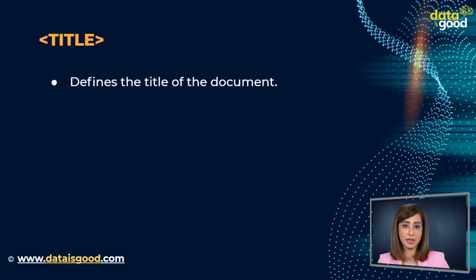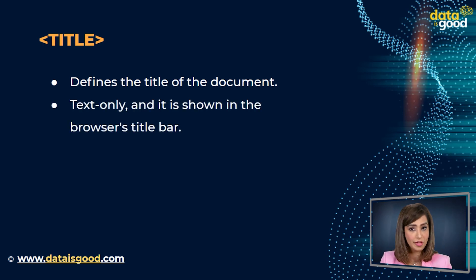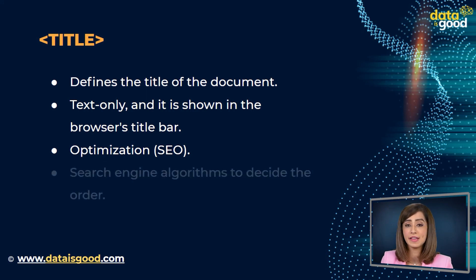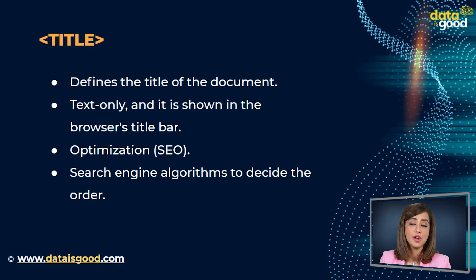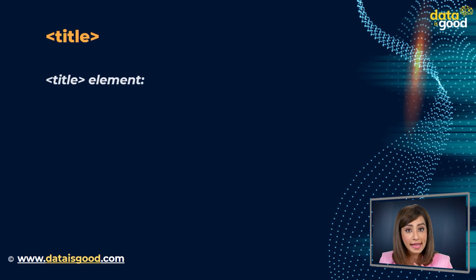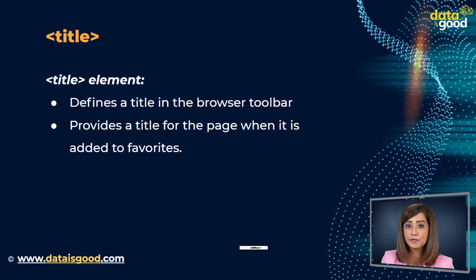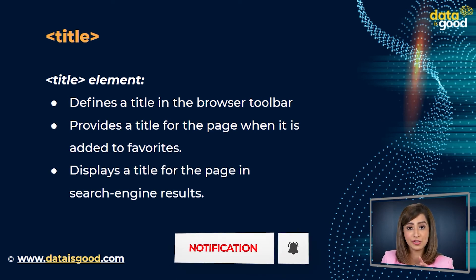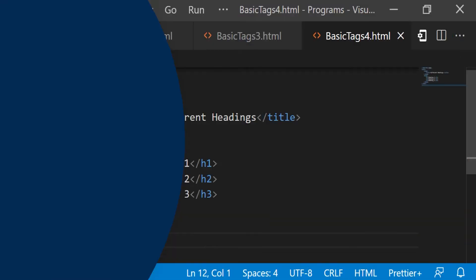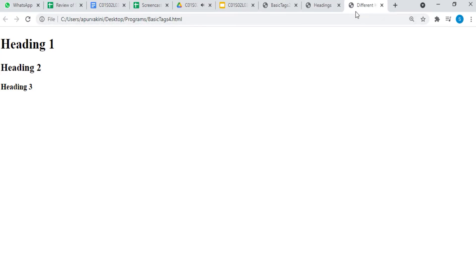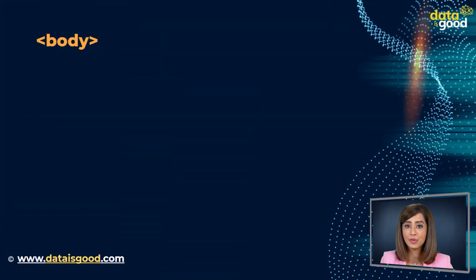Moving on to the next tag — the title tag. The title tag defines the title of the document. It must be text only and is shown in the browser's title bar or in the page's tab. The content of a page title is very important for search engine optimization. The title element defines a title in the browser toolbar, provides a title when added to favorites, and displays a title in search engine results. After saving this file, we can see the title of the web page is 'Different Headings'. Note: the title tag is required in HTML documents.